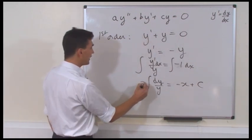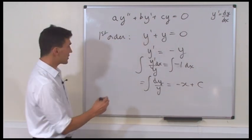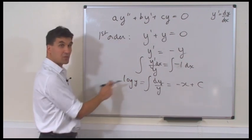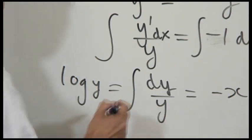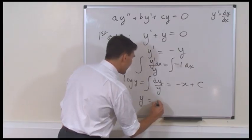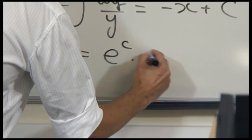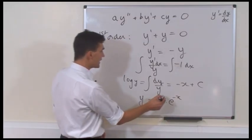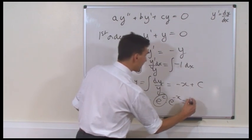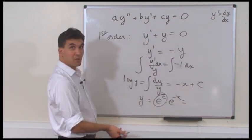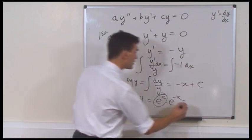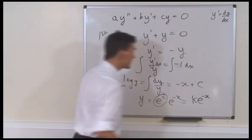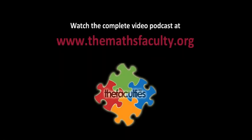DY over Y — that's an integral we can do. That's the logarithm of Y. Of course, that's the natural logarithm there. And now we can take the exponential of both sides, and you get Y is E to the C times E to the minus X. And if we write this E to the C — well, C is supposed to be an arbitrary constant. So E to the C is another arbitrary constant. So we could call that, say, K times E to the minus X.